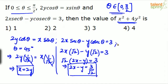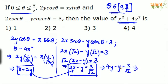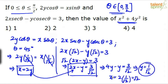Substituting x = 2y into 2x − y = 3/√2: 2(2y) − y = 3/√2, so 4y − y = 3/√2, which gives 3y = 3/√2, hence y = 1/√2. Since x = 2y, we get x = 2 × (1/√2) = √2.